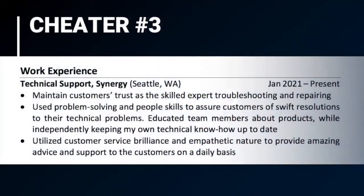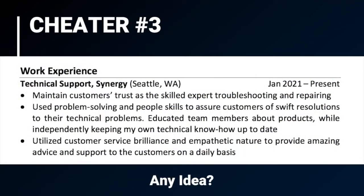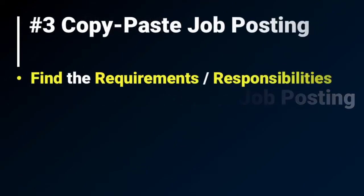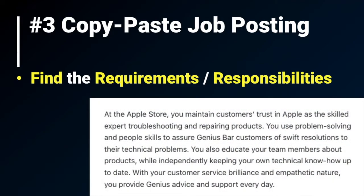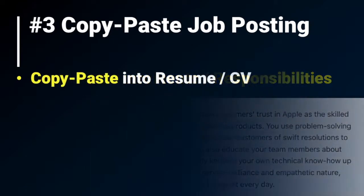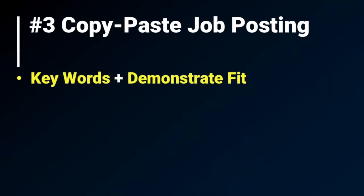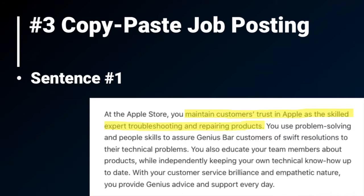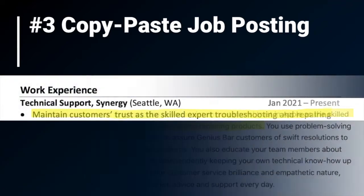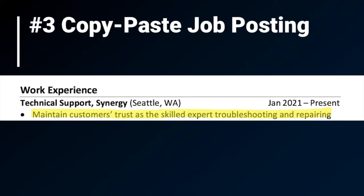That brings us to cheater number three — this one is more subtle and more difficult to spot, but it's one of the more widely used methods people have tried. This is copying and pasting the job posting. You find the responsibilities and requirements section of the job posting — or the qualifications or description section, whatever the company calls it — and you copy and paste it into your resume line by line. This allows you to hit all the keywords the company is looking for and demonstrate you're a fit. For example, for Apple's Genius position: 'At the Apple Store, you maintain customers' trust in Apple as a skilled expert troubleshooting and repairing.'